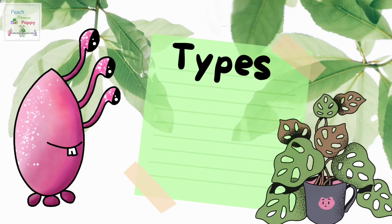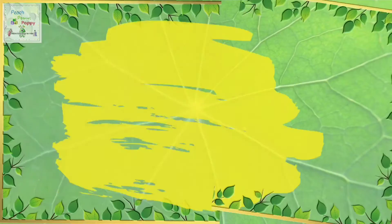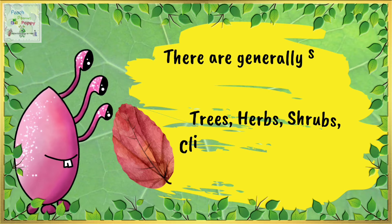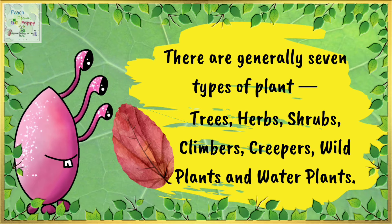Now let's have a look at what are the different types of plants. There are generally 7 types of plants, and those are trees, herbs, shrubs, climbers, creepers, wild plants, and water plants.